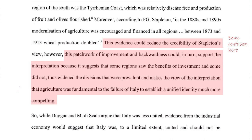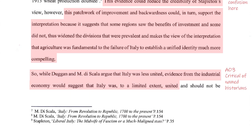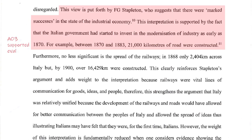In terms of annotation, it's helpful to make a distinction between the analysis and the evaluation. 'The disparity in wealth produced discontent supporting the evaluation' is analysis. There's a very specific evaluation where it says 'however, the weight of de Scala and Duggan's argument is reduced by the fact' — by the side of that, 'evaluation' would be a helpful comment, and it is supported evaluation because some factual material is introduced to test the interpretation. This approach continues on page 4, where you've got quite a detailed and balanced assessment of the view put forward by Stapleton. Stapleton is justified by factual information: 'this clearly reinforces Stapleton's argument and adds weight to the interpretation because railways were vital lines of communication.'